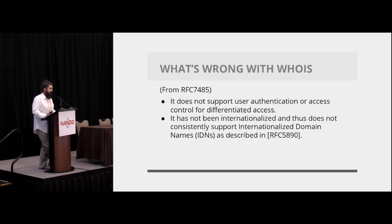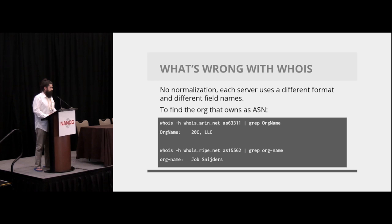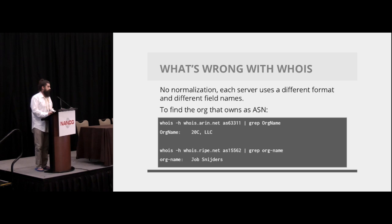WHOIS has no authentication possible — it's Telnet ASCII in, ASCII out. No internationalization because of that, so no UTF or anything like that. The biggest problem in my eyes is no normalization. Each server will give you the information that you want, but it's in a different format. In my example, ARIN does camelCase org-name to get the organization name that owns an AS, where RIPE does org-dash-name. So it makes everything you do incredibly hacky.